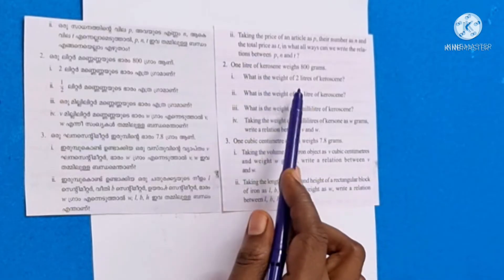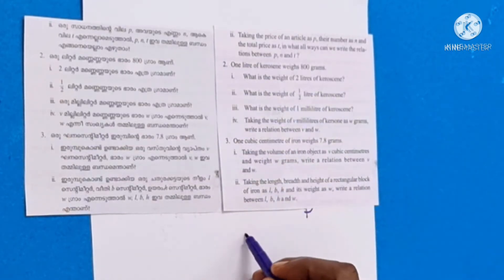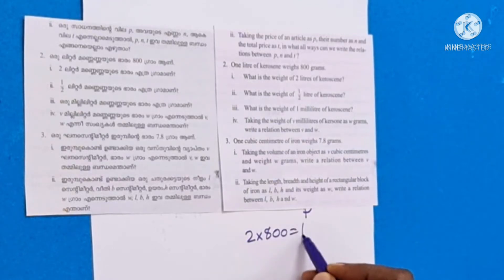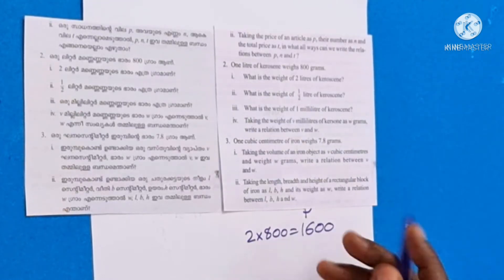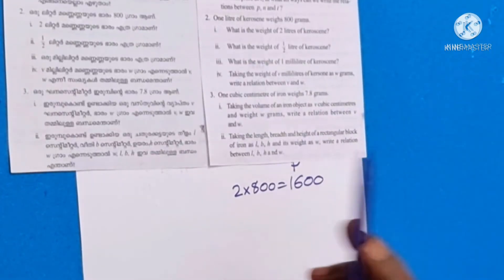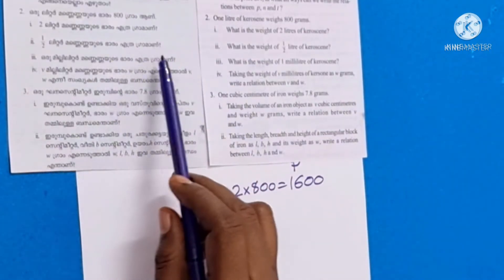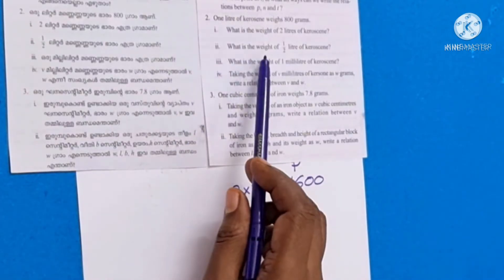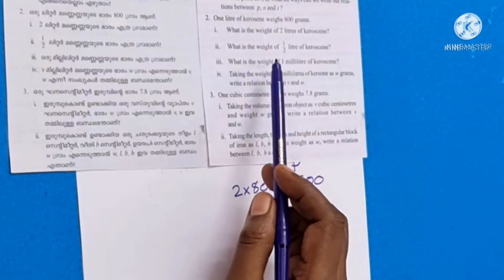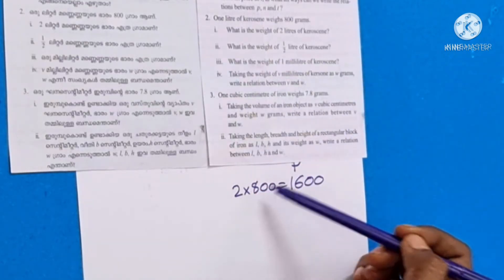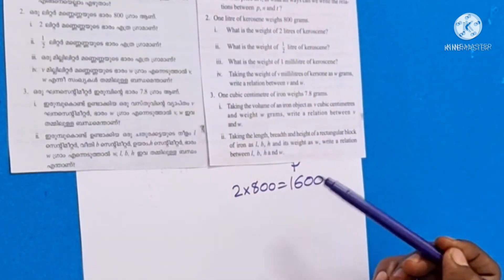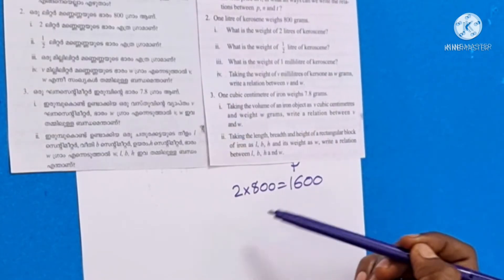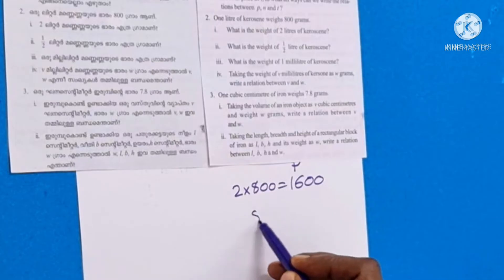What is the weight of 2 liters of kerosene? What is the weight of 2 liters of kerosene? 5 liters — which is 6 liters? Then what is 1 liter? It can count that 1 liter means 8 liters.